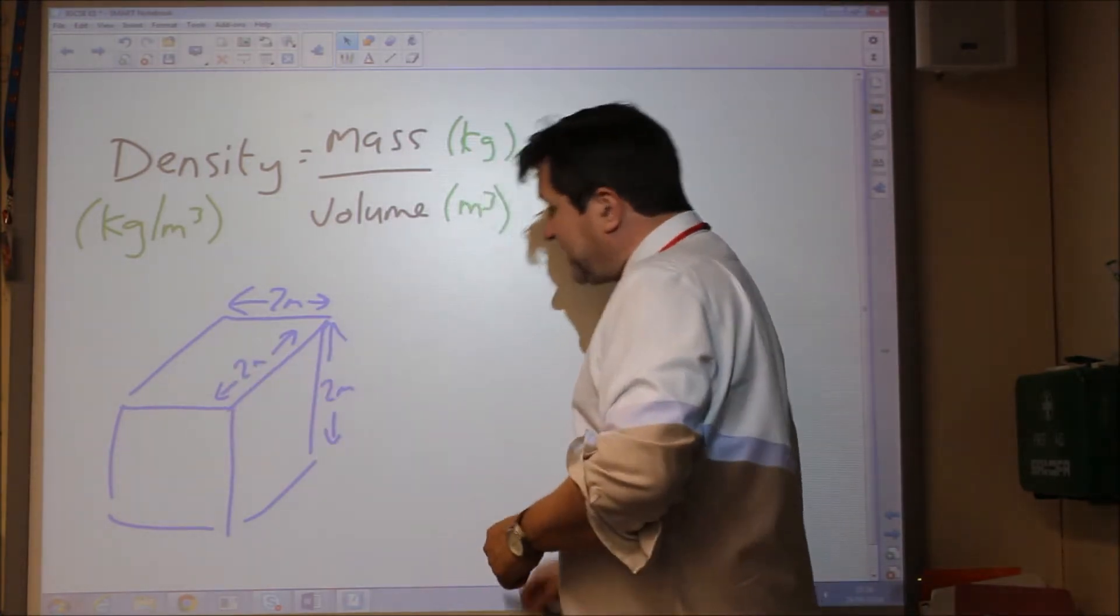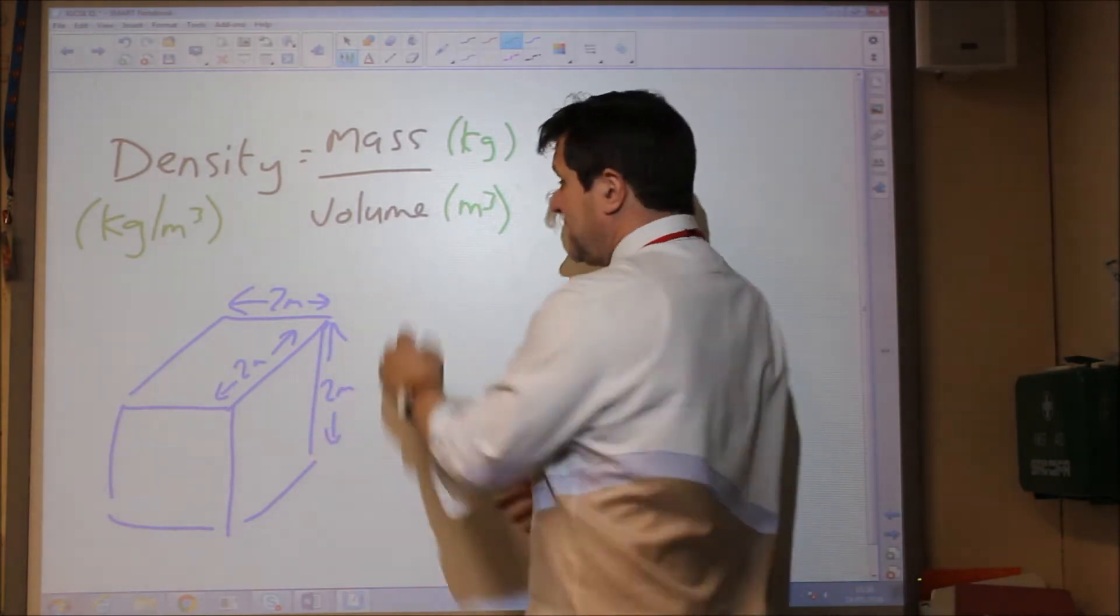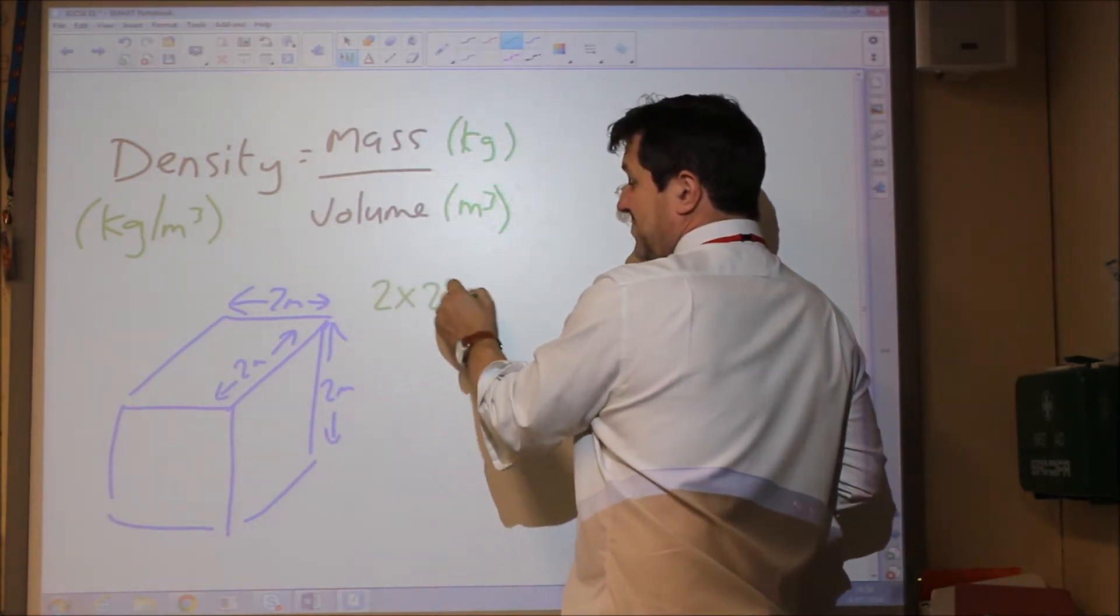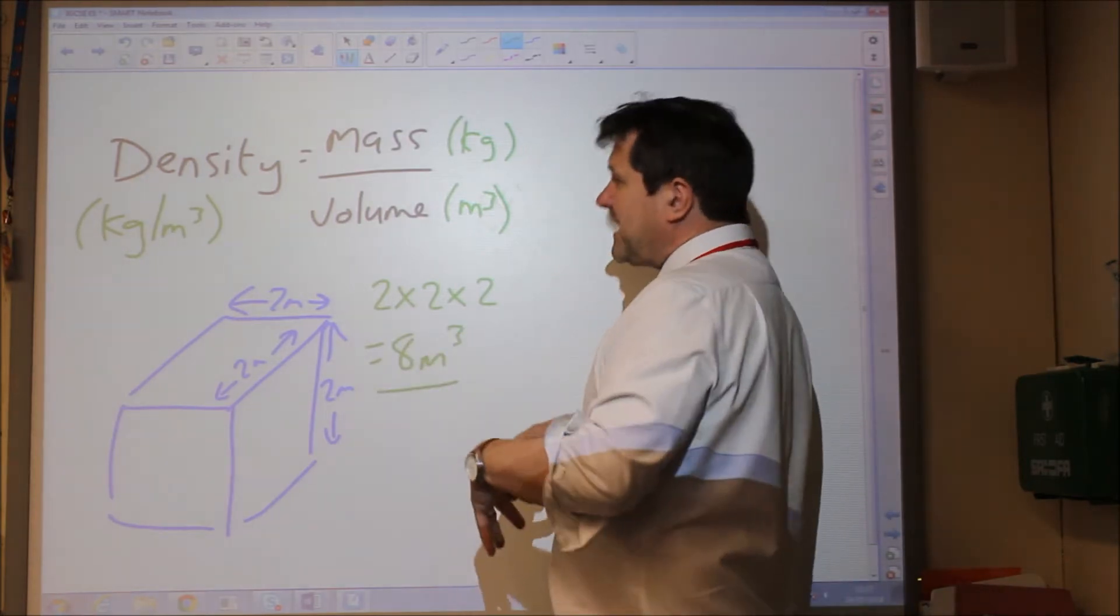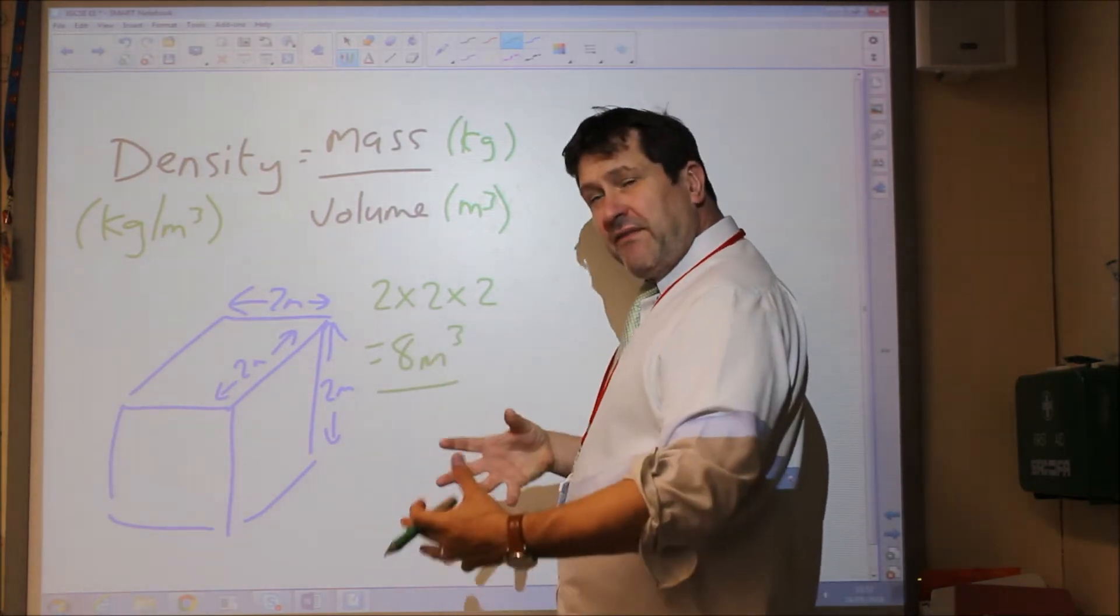because we would simply say the volume is length times breadth times height, which is two times two times two, which is eight metres cubed. Now if we were then given the mass, so if, for example, the mass of this was 16 kilograms,